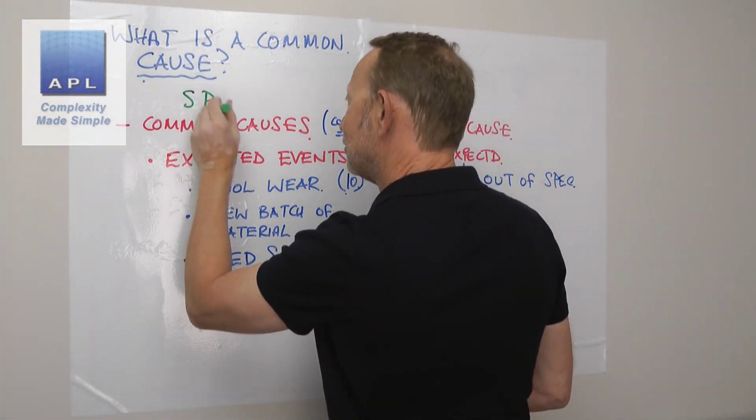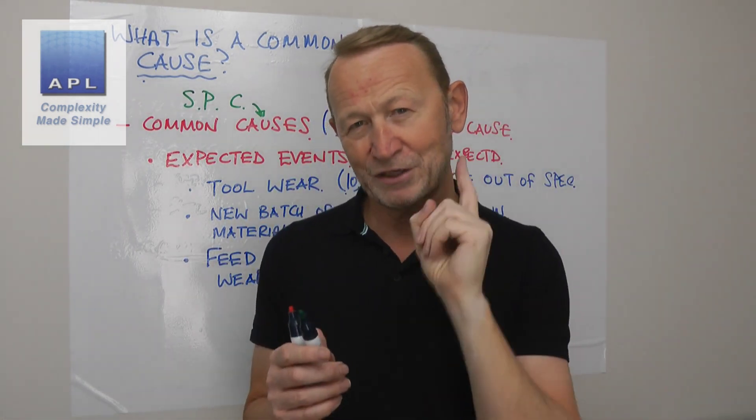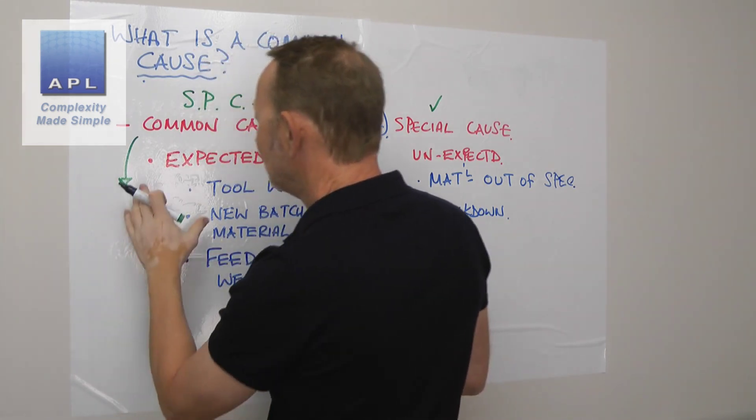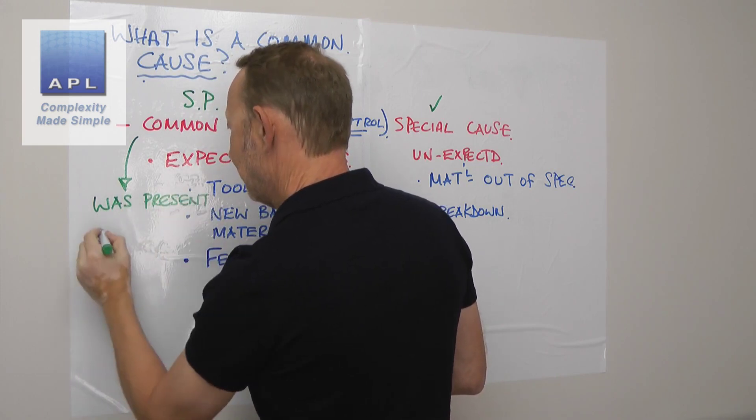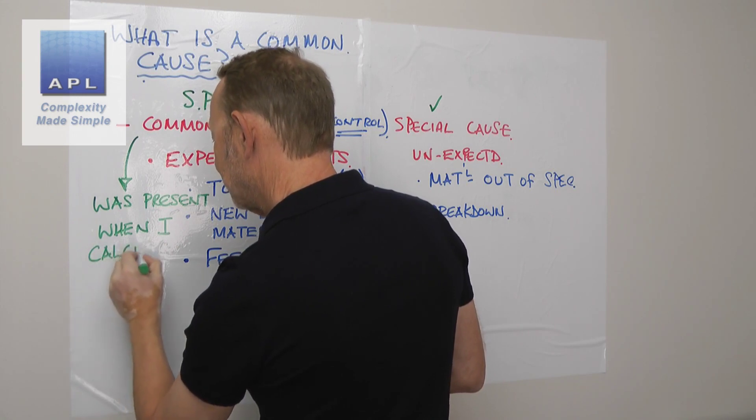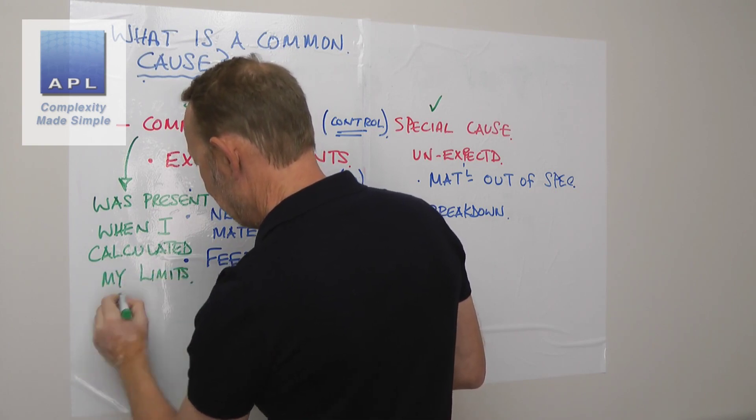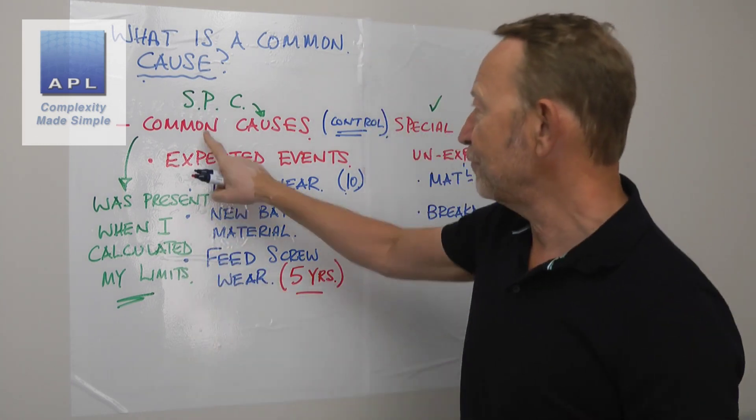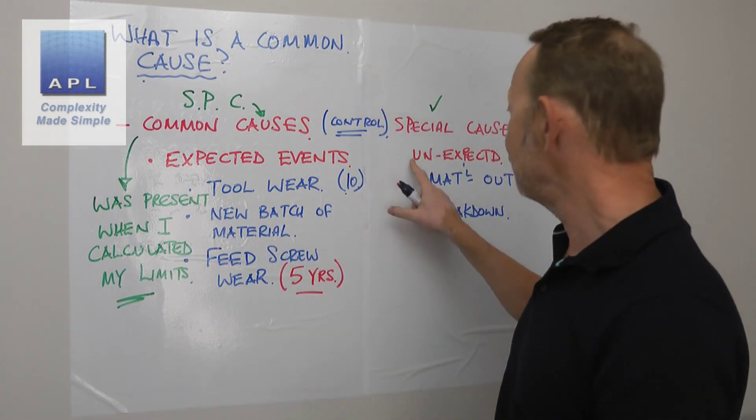But in the world of SPC, what would this be? So if we start talking SPC now, what would be a common cause, what would be a special cause? Well, now this is the way I would view it. A common cause: this variable was present when I calculated my limits. So when I collected the data to calculate the SPC limits, if this cause was in the data set, then it is common to the control limits. If the event was outside of that, it would be a special event.